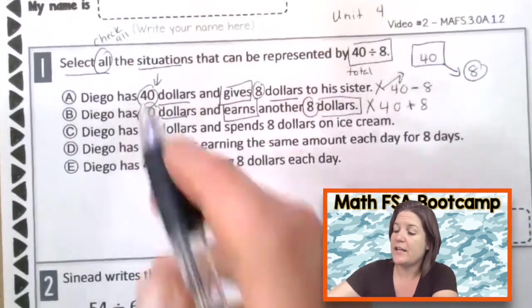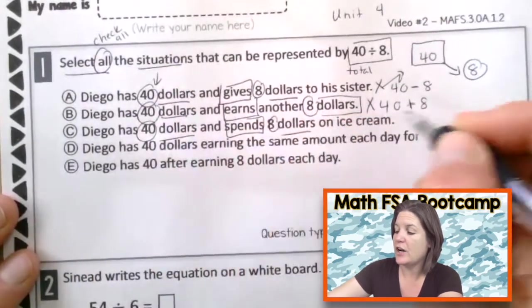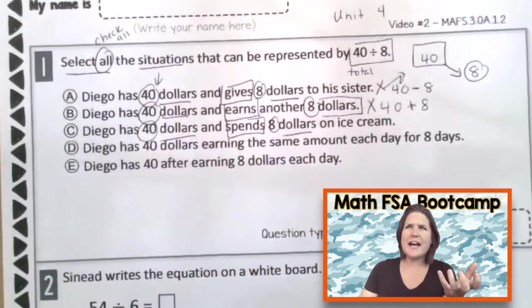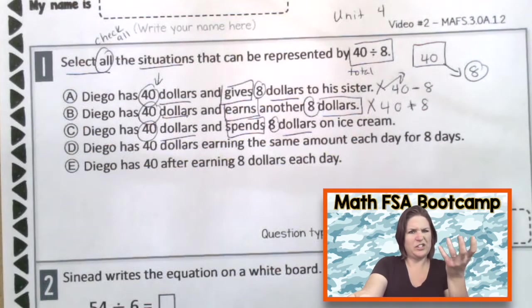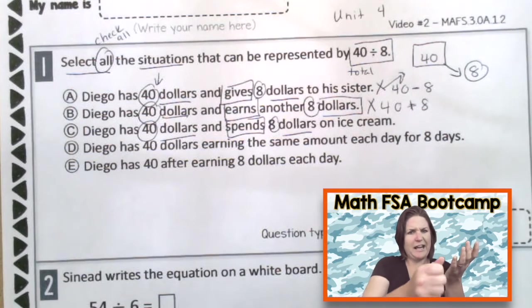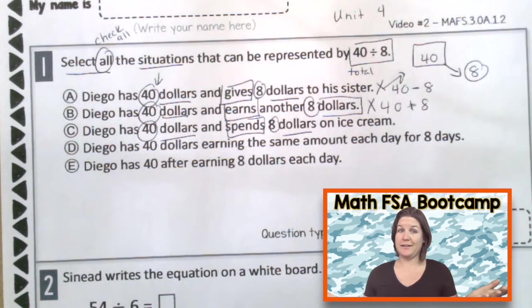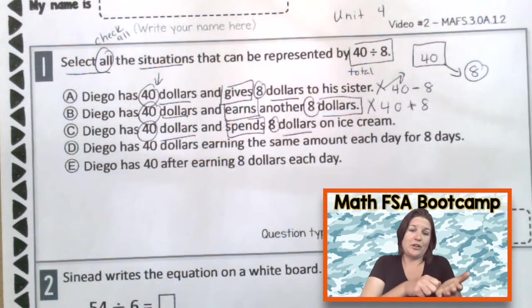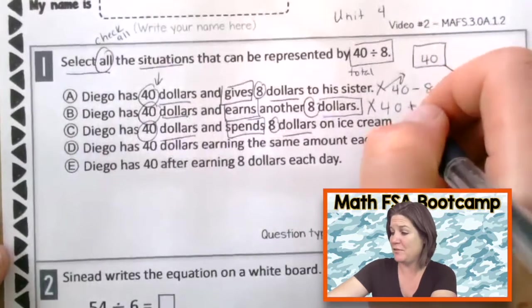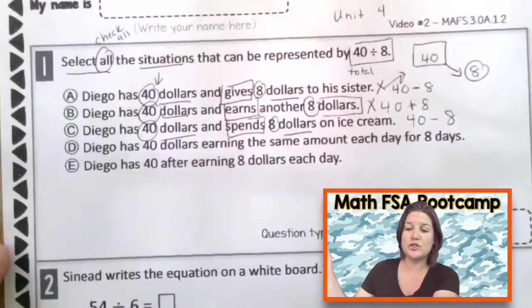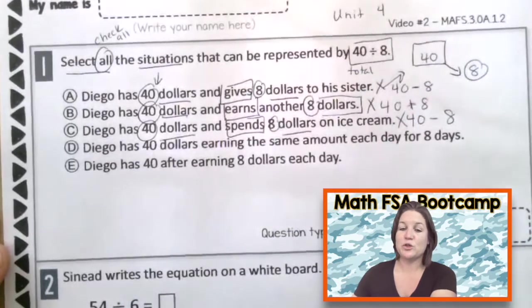C. Diego has $40 and spends $8 on ice cream. So he has $40 and he uses some of it to buy ice cream. So is he still going to have 40? Is he separating it $8, $8, $8? No, he's just doing it one time, right? So what operation is that? Subtraction. He has the $40 and he's giving away 8 of his dollars for ice cream, which that's some expensive, fancy ice cream there for $8. My goodness. So is choice C correct? Nope. Let's eliminate.